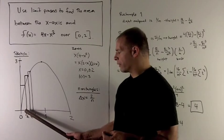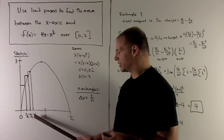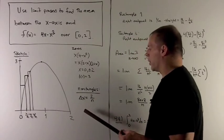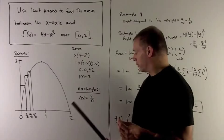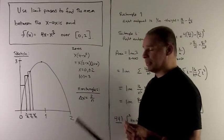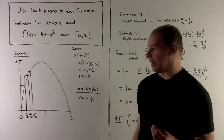Next point is 2 over n, next point is 4 over n, next point is 6 over n, and then we keep going out. So for the i-th rectangle, the right endpoint is going to be 2i over n.